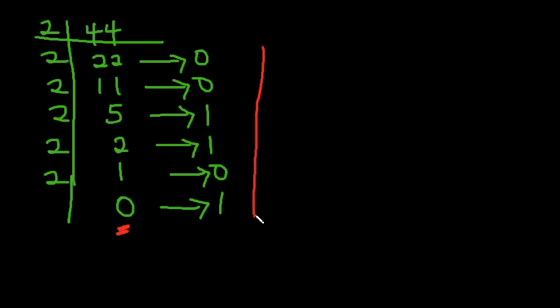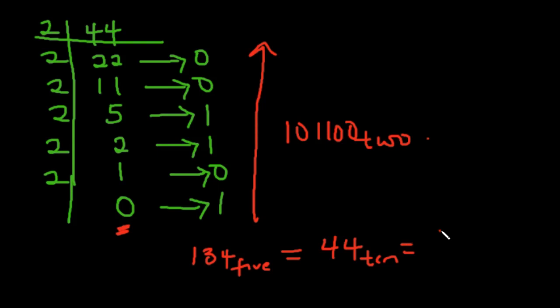So our answer now we write from bottom up. That would be 1, 0, 1, 1, 0, 0 in base 2. So that means what we are saying is that 134 base 5 is the same thing as 44 in base 10, which is equal to 110100 in base 2.